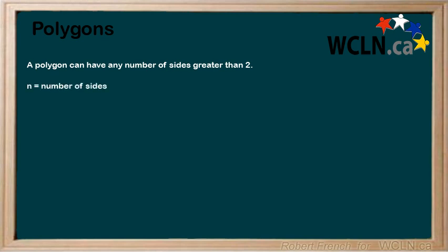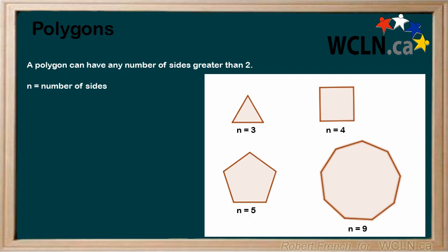N is used to represent the number of sides a polygon has. Here, we see a few examples of polygons with different numbers of sides.